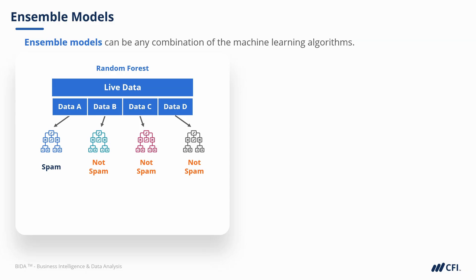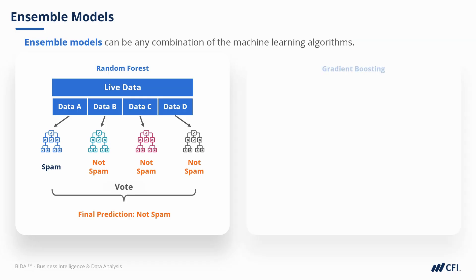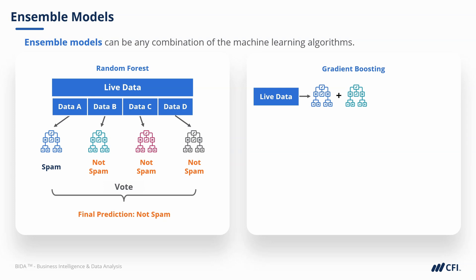These act like votes, and so the overall prediction in this case would be not spam. The other common method is gradient boosting, and this is where the results of one decision tree are fed into the next one.